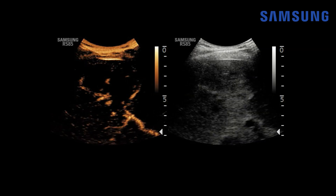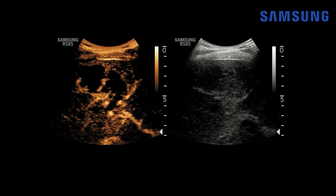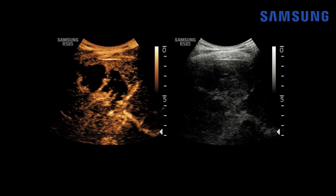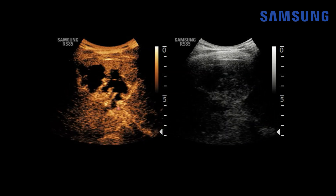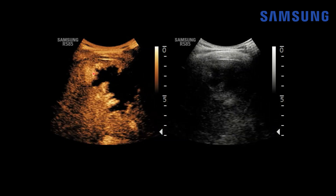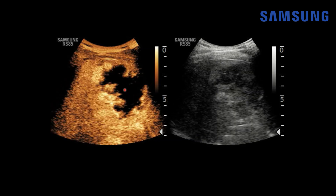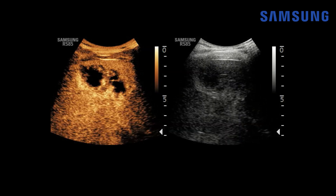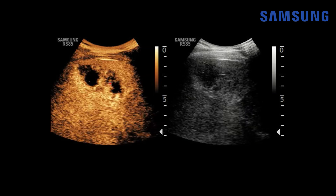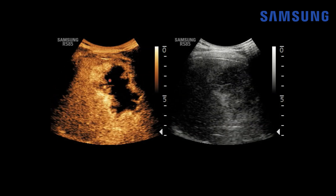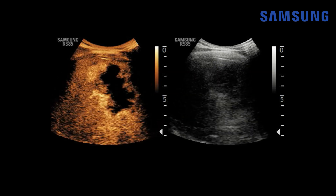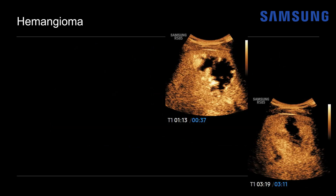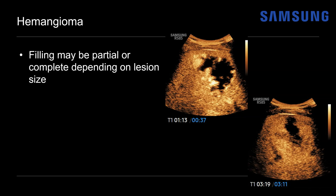On real-time imaging, shortly after contrast injection we see peripheral globular contrast enhancement with gradual centripetal progression. By about 30 seconds post-contrast there's still a lot of hemangioma to fill in, but we're not seeing any areas of washout — just areas centrally that are not yet filling in. That can be normal for larger hemangiomas. Even by five minutes, this hemangioma did not completely fill in.